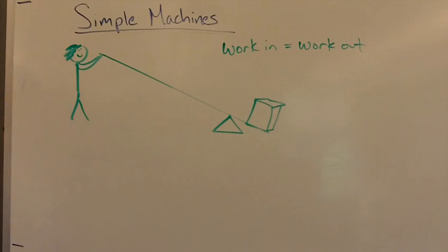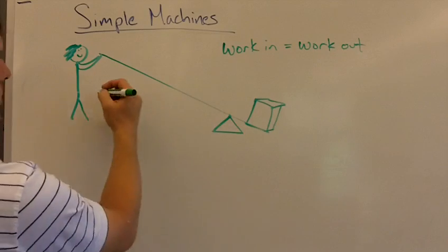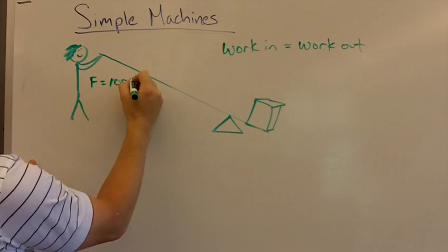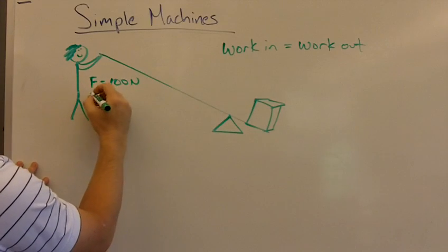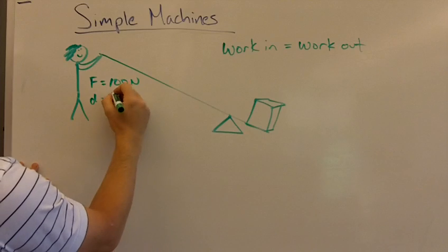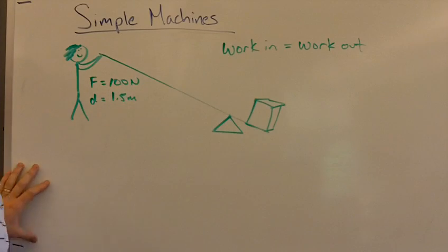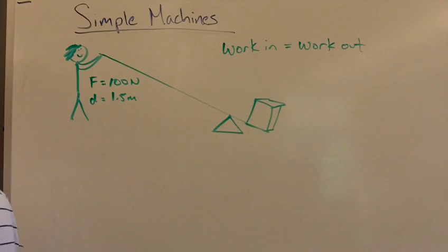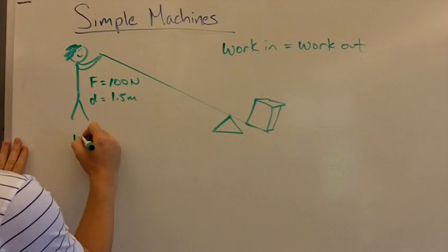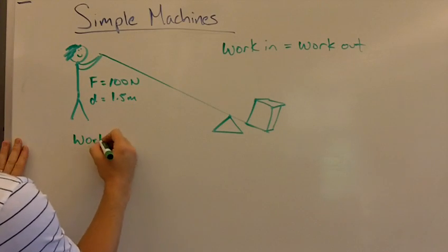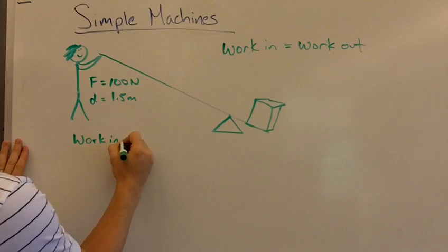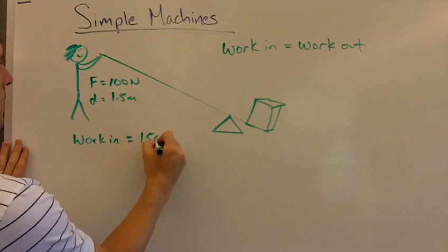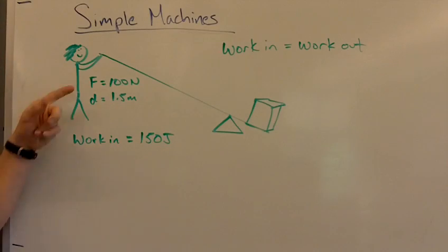Here we have this example. Let's say they're applying a force of 100 newtons and they push down 1.5 meters. So 100 newtons and 1.5 meters, that's the force in and distance. The work in equals force in times distance in. We can do that in our head. That's going to be 150 joules, force times distance.